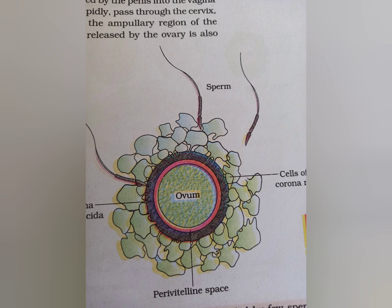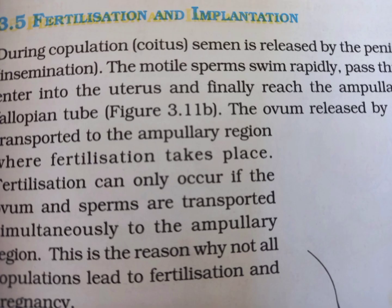During fertilization, a sperm comes in contact with the zona pellucida layer, which is the outermost layer of the ovum. This induces changes in the membrane that block the entry of additional sperm, ensuring that only one sperm can fertilize an ovum.